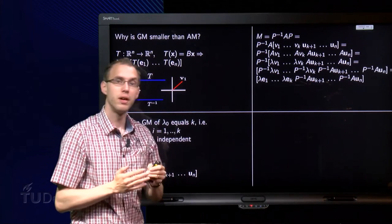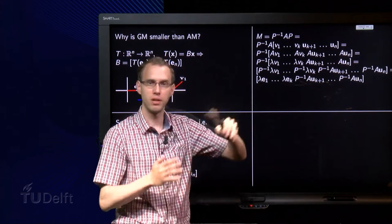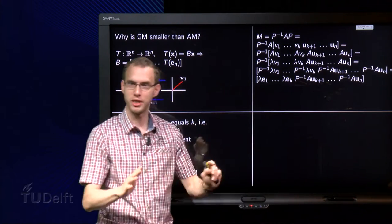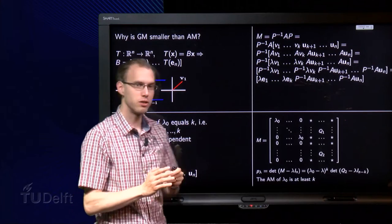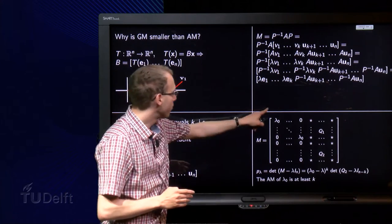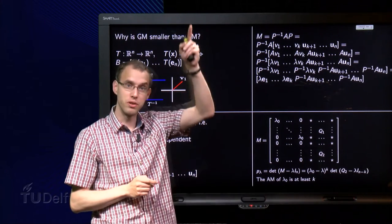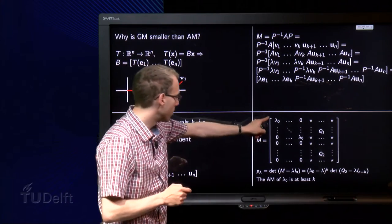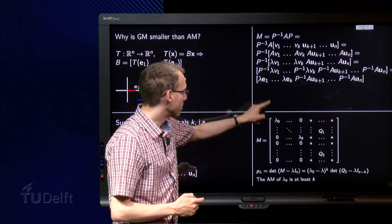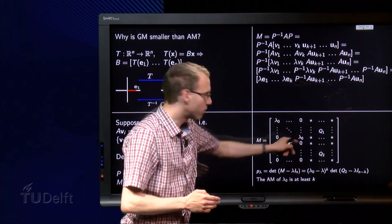So our matrix M gets a very nice structure, λ₀e1, λ₀e2 up to λ₀ek. And here rubbish. So let's put that explicitly. So here we have our matrix M. The first column is λ₀ times e1, so λ₀ times 1 and all 0's. Like this. The second column becomes λ₀ times e2, so 0, λ₀ and all 0's. And it goes on to the kth column.